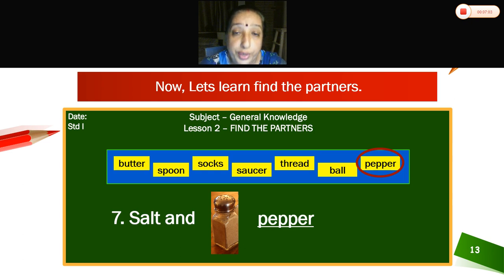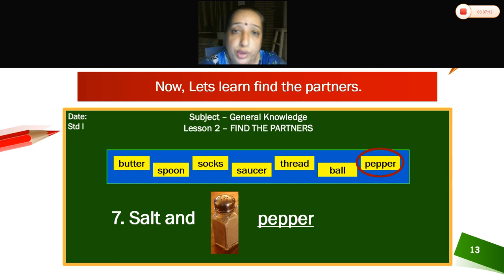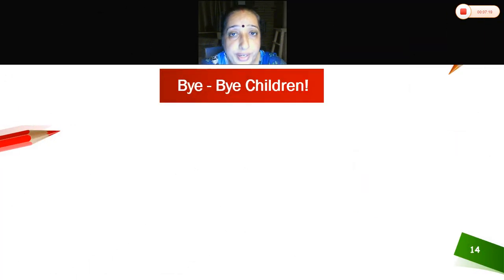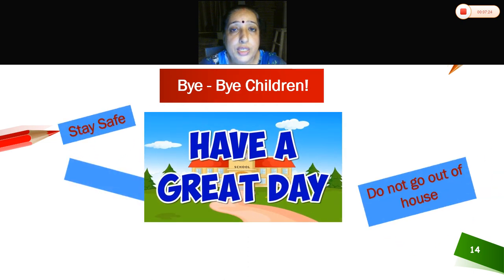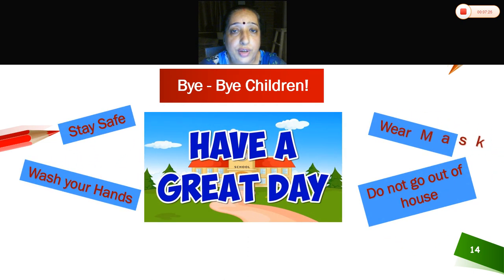So today we have done Lesson 1: Spot the Odd One Out, and Lesson 2: Find the Partners. Have you understood, children? Yes. Bye children, have a great day. Be healthy, stay safe. Wear masks when you go outside. Bye.